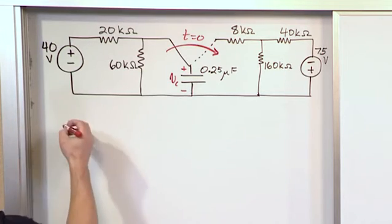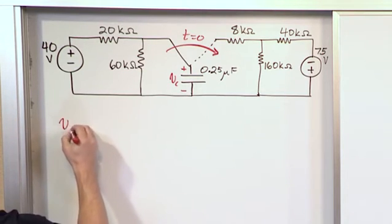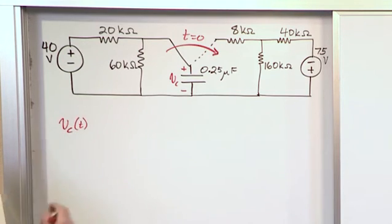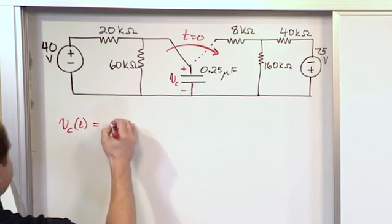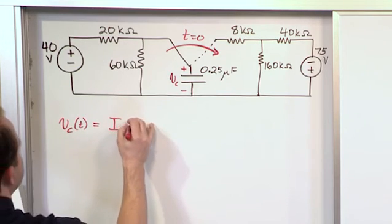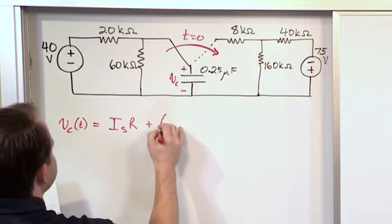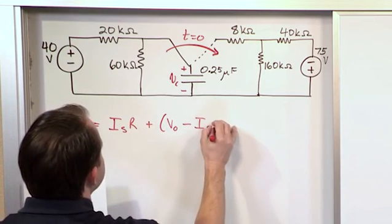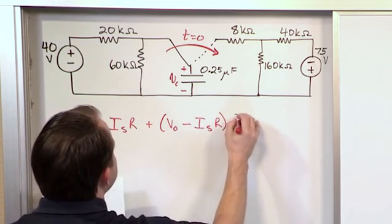And the equation that we came up with for that in the last section is the voltage across the capacitor as a function of time was the following. And this is coming straight from the last section. I sub S times R plus V naught minus I sub S times R e to the minus T.